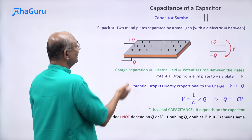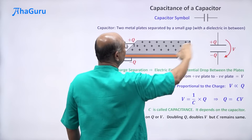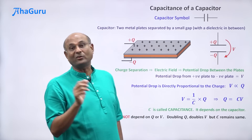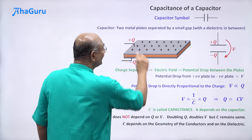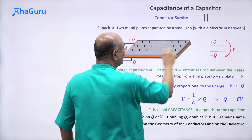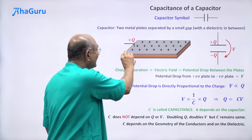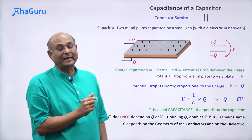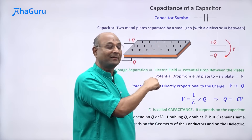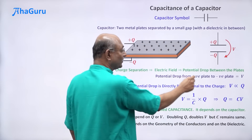Then what does C depend on? It depends on the overall structure of the capacitor — the geometry of the conductors and the dielectric used. So C depends on the capacitor's shape, size, geometry, and the insulating material. It does not depend on Q and V. Q depends on C and V, but C does not depend on Q or V.